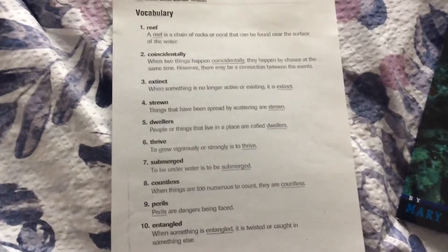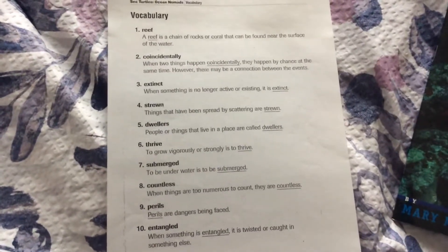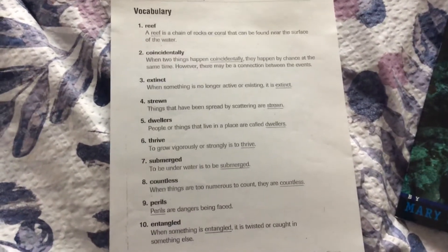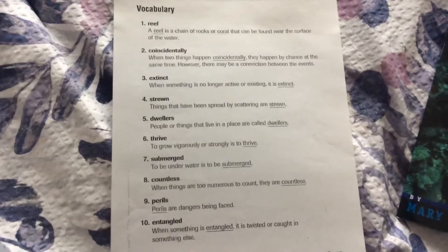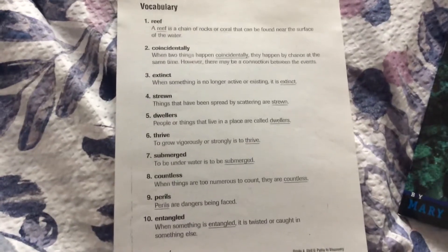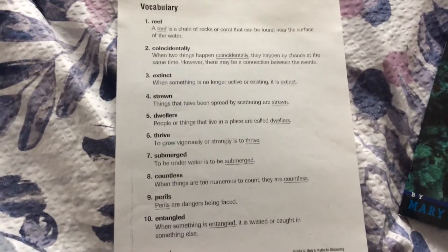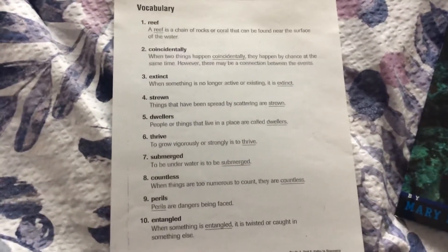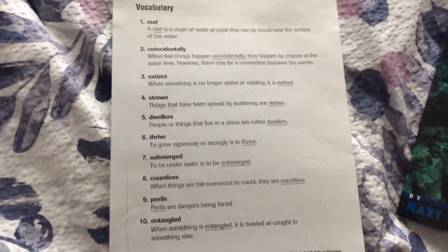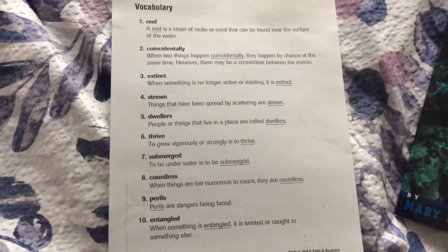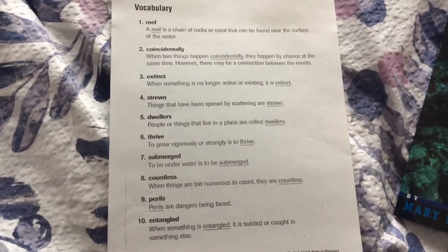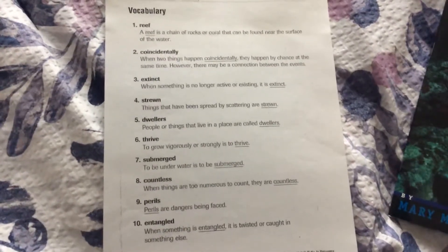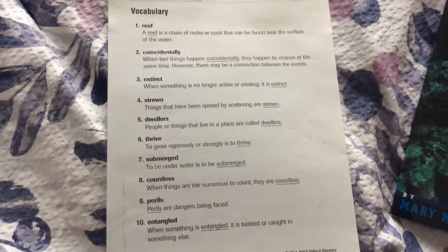Extinct. When something is no longer active or existing, it is extinct. Strewn. Things that have been spread by scattering are strewn. Dwellers. People or things that live in a place are called dwellers. Thrive. To grow vigorously or strongly is to thrive.